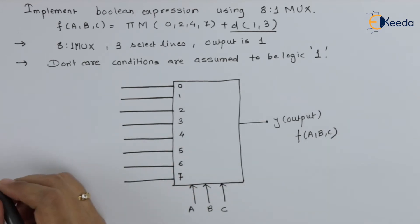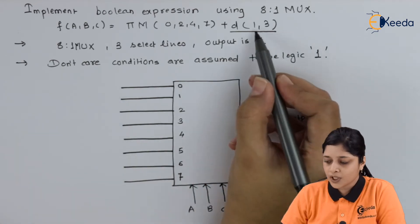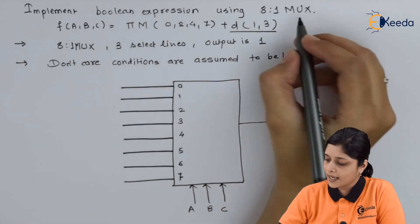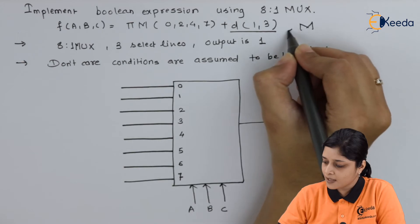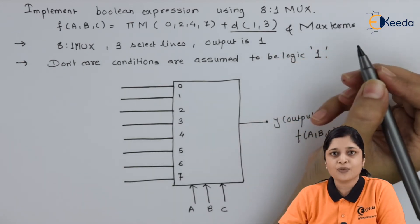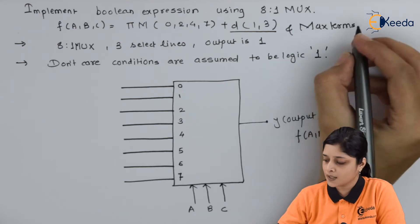So the logic is don't care conditions you have to apply to logic 1 and max terms you have to apply to logic 0.